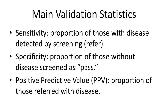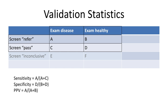The main validation statistics are: sensitivity - the proportion of those with disease detected by screening (the refers); specificity - the proportion of those without disease who are screened as a pass; and positive predictive value - the proportion of those referred that actually have the disease.